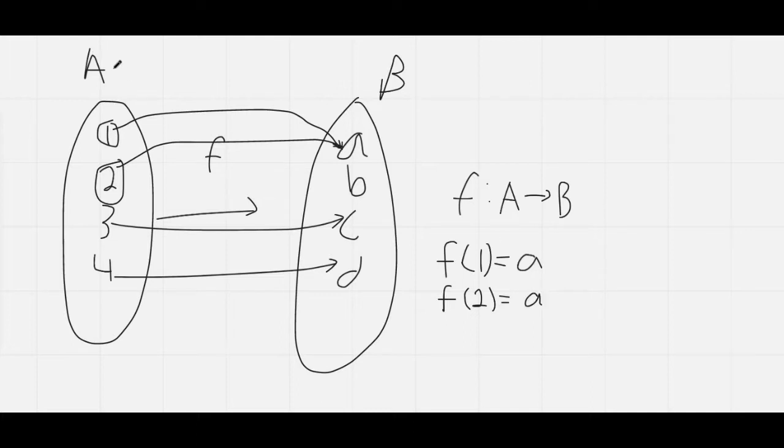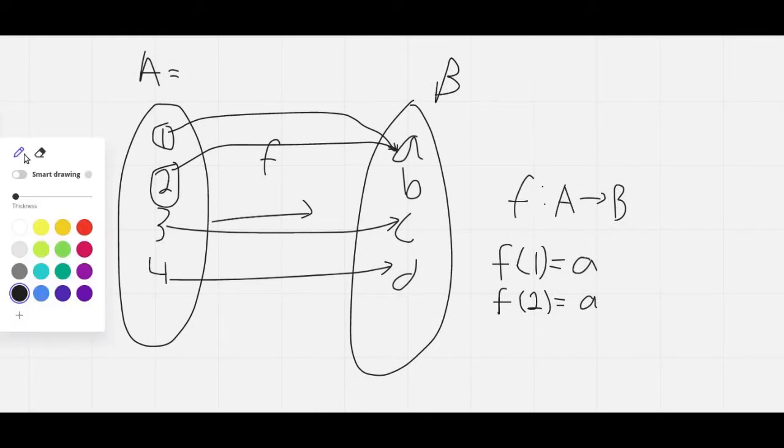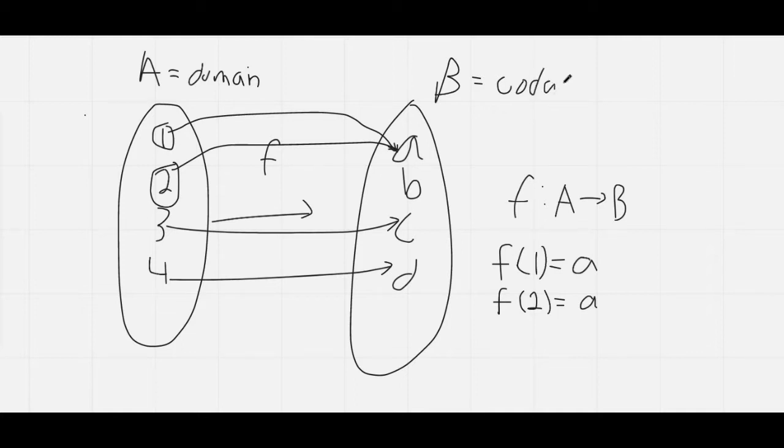Now formally, A is called the domain, and B is called the codomain.